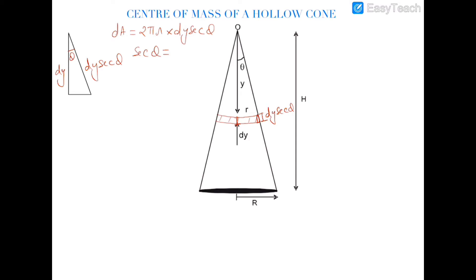The value of sec theta can be found from this triangle. Sec theta equals hypotenuse over base, where the hypotenuse is √(h² + r²) and the base is h, so sec theta = √(h² + r²) / h.